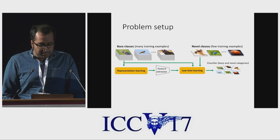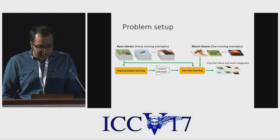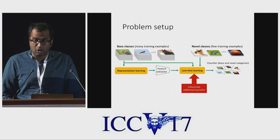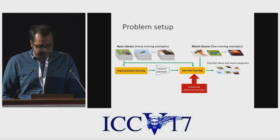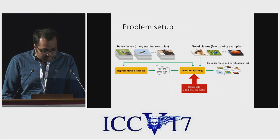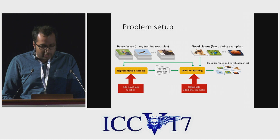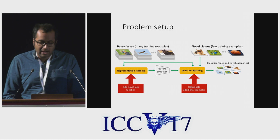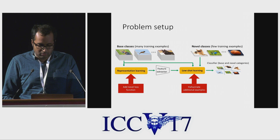Our paper makes two contributions in this setup. First, we show that we can hallucinate additional training examples for the novel classes, thus boosting performance on the novel classes. Second, we present a novel loss function aimed at producing a feature representation better suited to the problem.